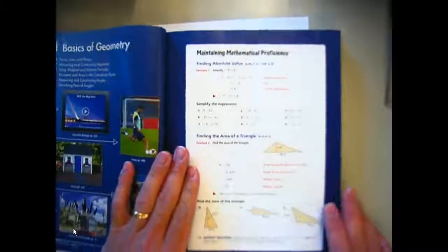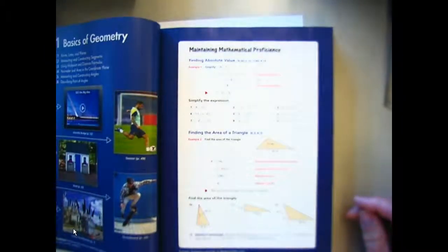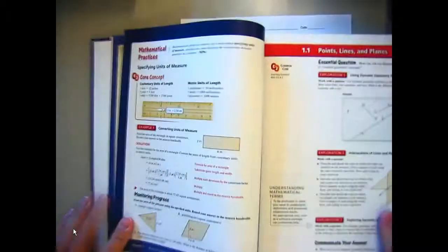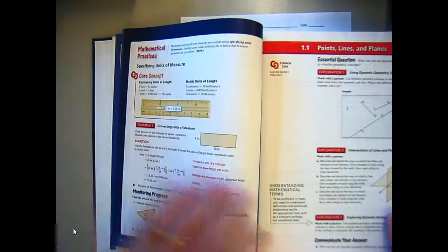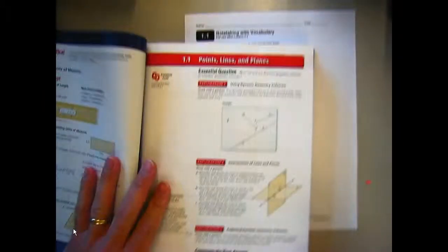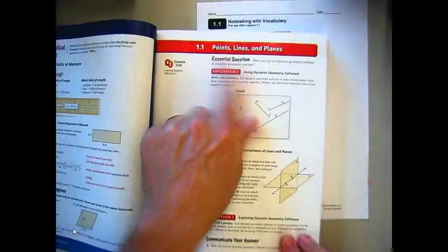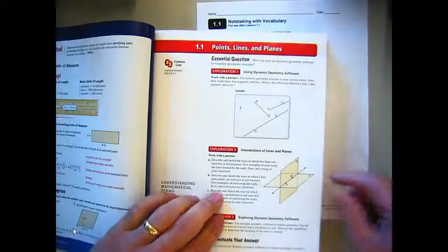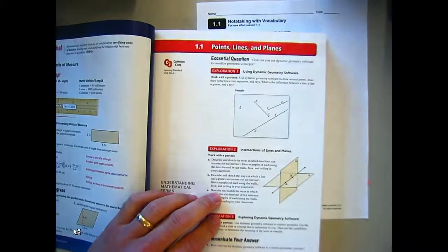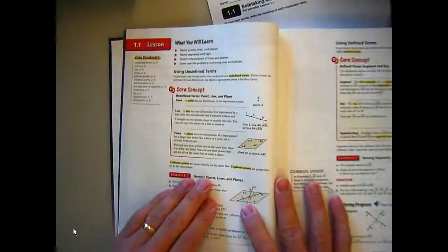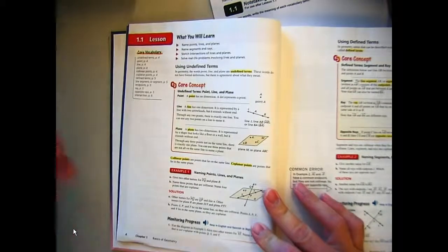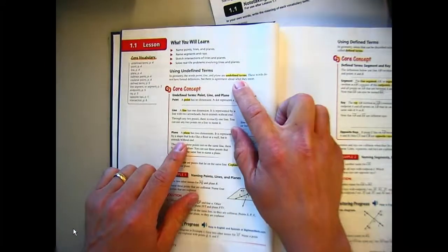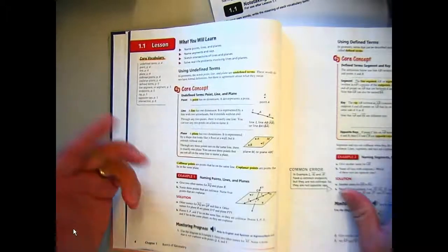Let me explain how some of this stuff is set up. Yesterday we talked about the maintaining mathematical proficiency, and then we have the mathematical practices — that's at every chapter. Then at the beginning of each section, 1.1, it talks about points, lines, and planes. That's our title. And then we have our explorations, which we are not doing right now. The next page is kind of like your old textbook — like your old algebra book — where it has some things that are bold and highlighted. Those are the things that we're defining right here, listed on our definition sheet.